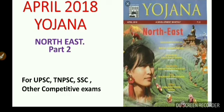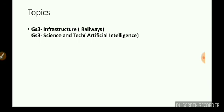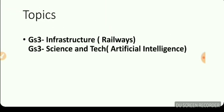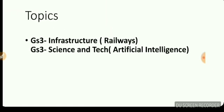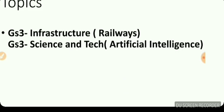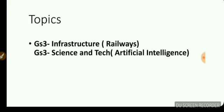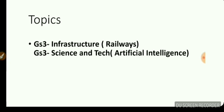In Part 2, we will discuss two major topics. The first is infrastructure — specifically roadways and railways — which falls under GS3 infrastructure. The second is Artificial Intelligence, which is a GS3 Science and Technology topic.